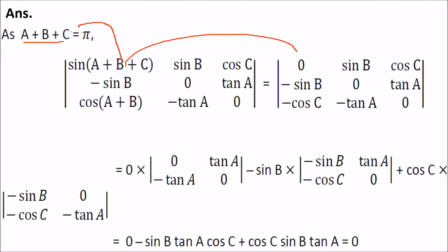We can write a plus b equal to π minus c and replace here — this will give cos minus cos c. With this determinant, we can expand along any column or row. We open it with the first row, and when you solve it, two terms cancel out and you get zero.